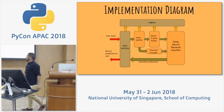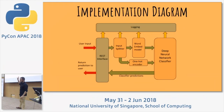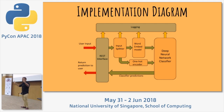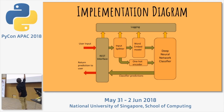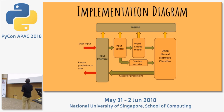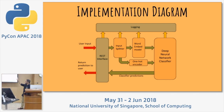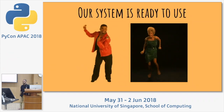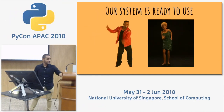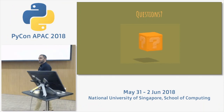The implementation diagram: a RESTful interface built using Flask, Django, or similar, with a logging module on top. Input goes to a splitter, then to the word embedding model and one-hot encoder, then to the combined deep neural net classifier. Outputs at each stage are logged, and the classifier predictions are returned via the RESTful interface to the user. And with that, our system is ready to use.